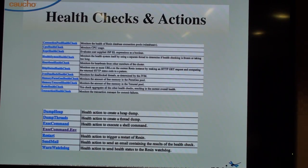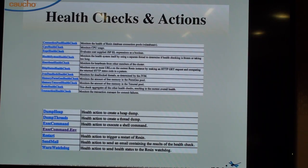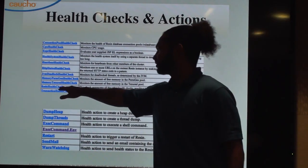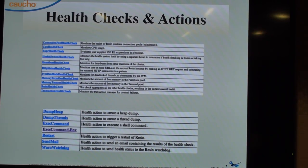Health checks and actions: you can look at CPU health, and the Resin health check aggregates all your other checks together. You can define your own health checks using a combination of: dump heap, dump threads, execute command, restart, or send mail. You can trigger actions based on JMX metrics or based on request time. It's quite varied — the custom health checks we're seeing people monitor within their applications — but it gives them the confidence to know their application is not going to restart unexpectedly.